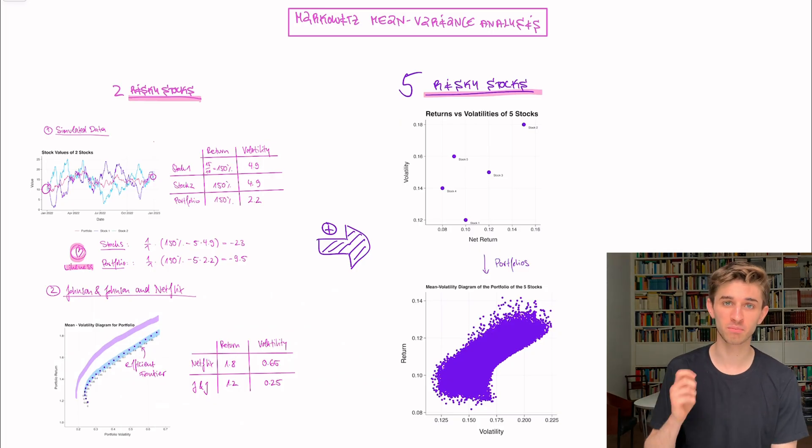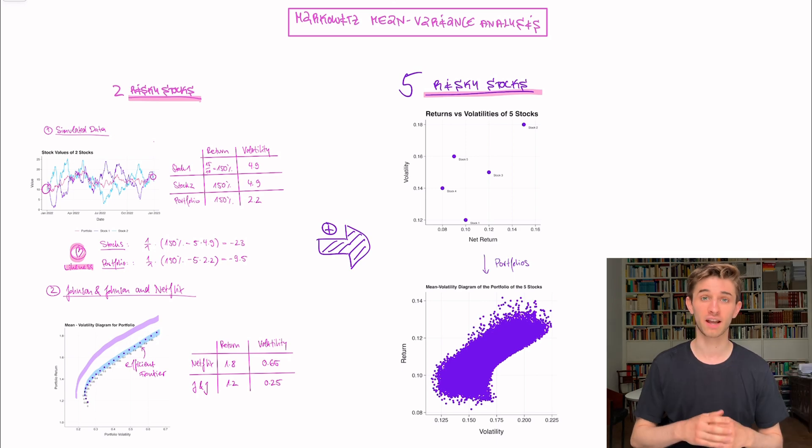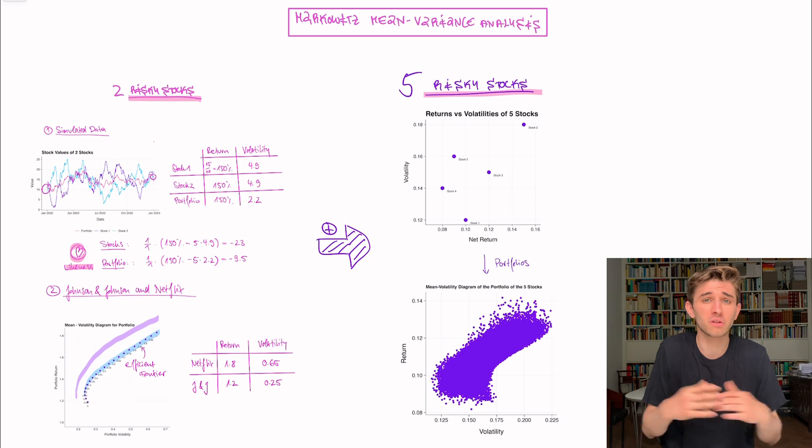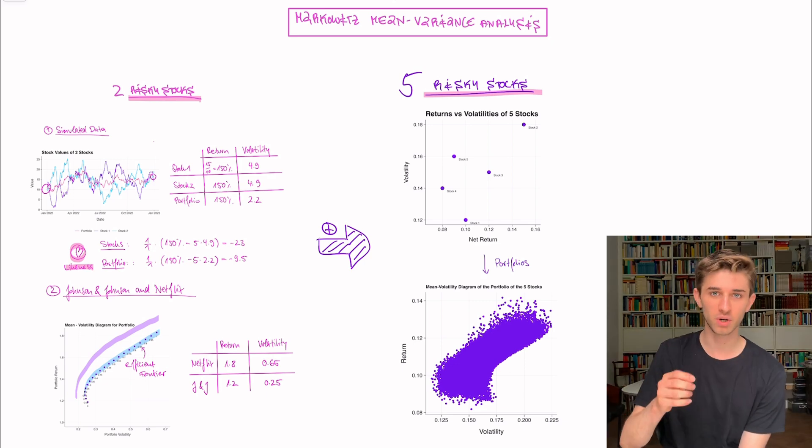We're right in the middle of discussing Markowitz Mean Variance Analysis. In the last video, we looked at two risky assets. But of course, in the world, there are a lot more assets than two. Let's see what happens if we had more assets. I will show you the same analysis for five risky stocks.